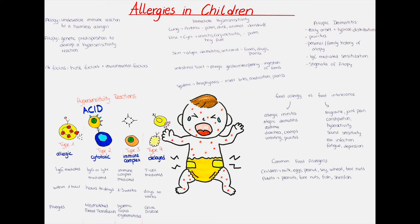Atopy, another term used in the context of allergies, is the genetic predisposition to make IgE antibodies in response to allergen exposure. This can manifest as a classic allergy, but also as allergic rhinitis, asthma or atopic dermatitis.